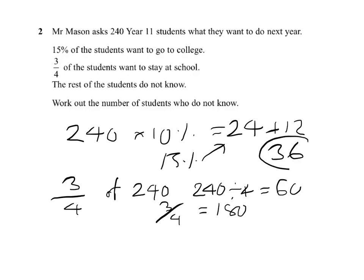We've got 36 plus 180 is 216. So 240 subtract 216 leaves us 24 students, and there's 24 students who don't know what to do.